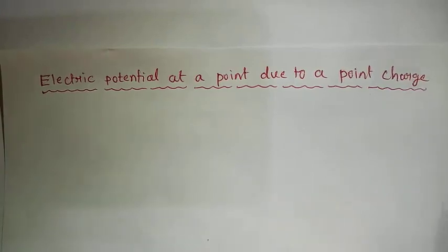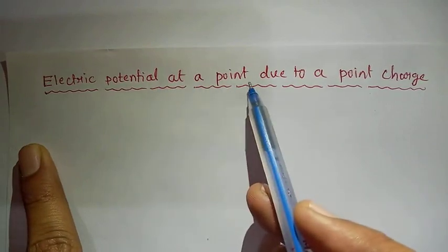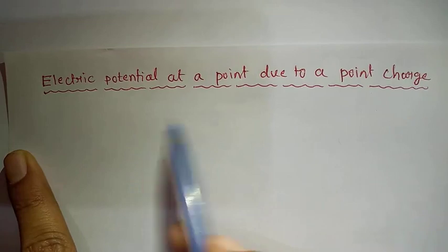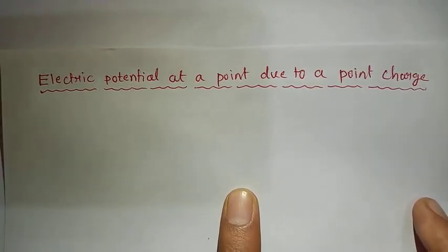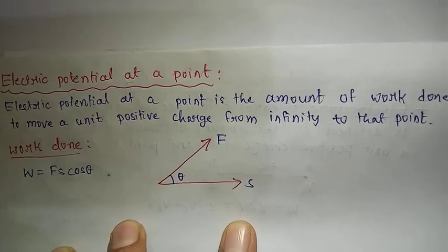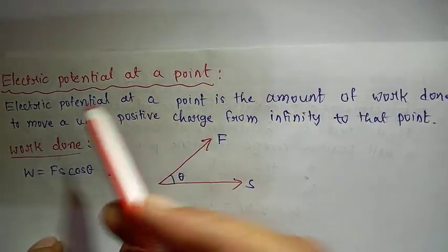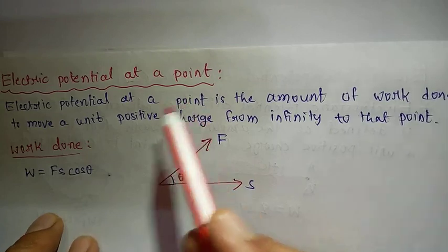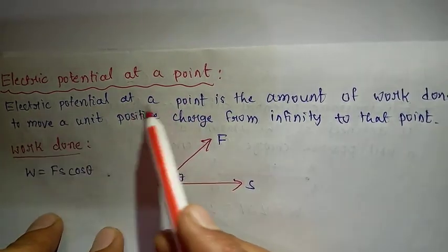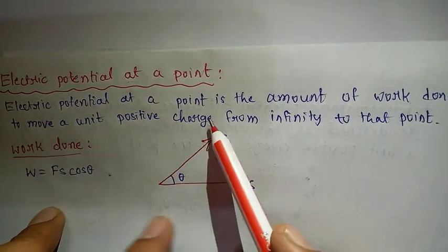Good morning. Today we discuss an important derivation: electric potential at a point due to a point charge. Electric potential at a point is defined as the amount of work done to move a unit positive charge from infinity to that point.